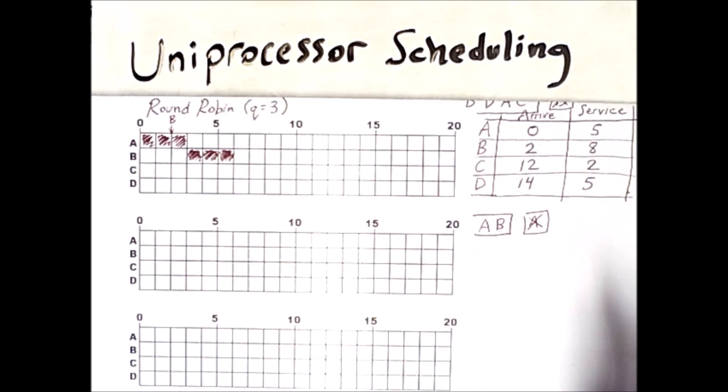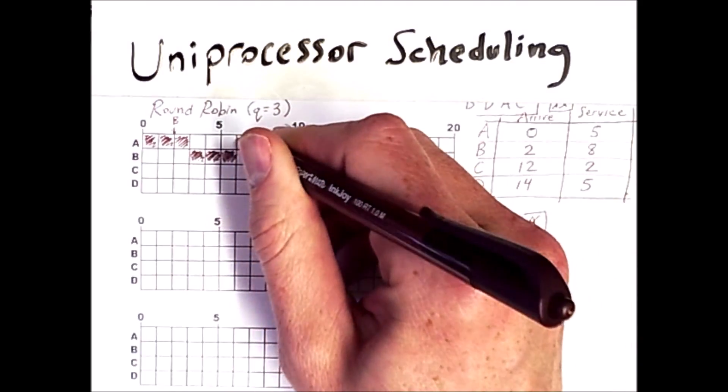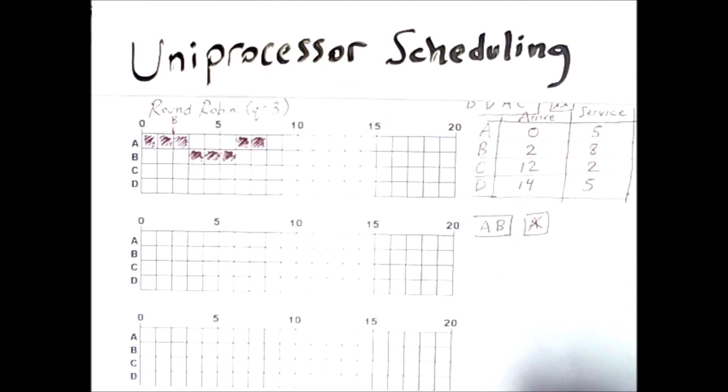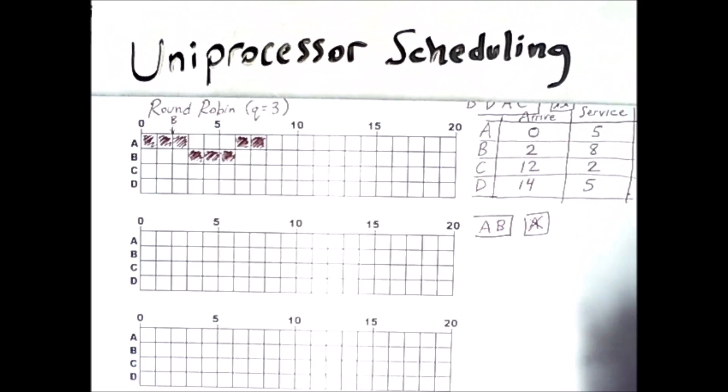But A has already executed for three of its five units. So it only has a total of two left. So what does that mean? Well, it executes for two units and then it's done. After executing for those two units, B gets to go again. And B will get to go for its full three units.